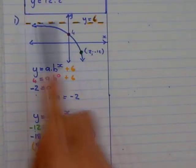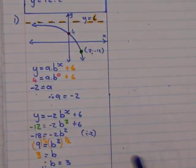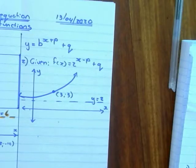Okay, that's when I have a y-intercept and a point and the asymptote. Let's look to the other example.